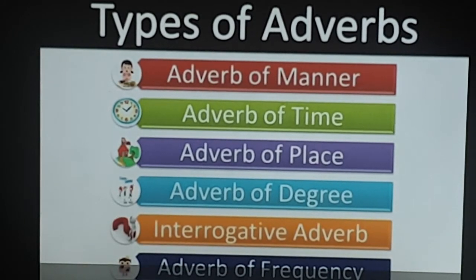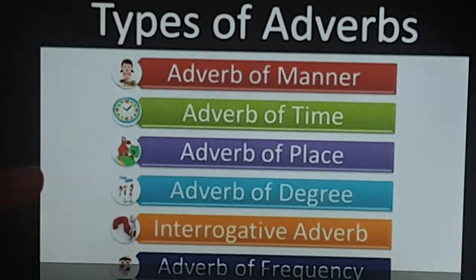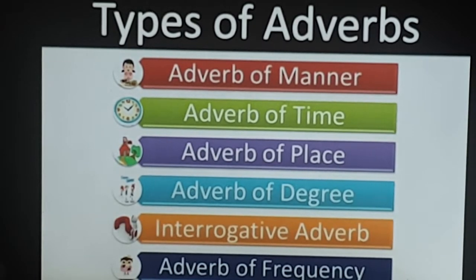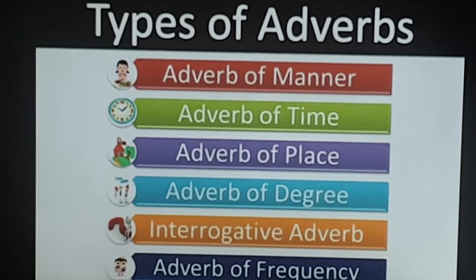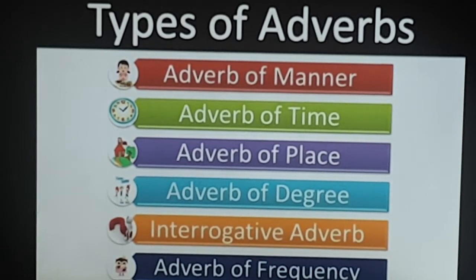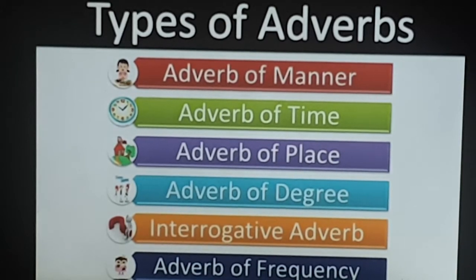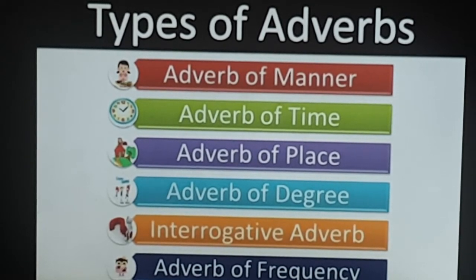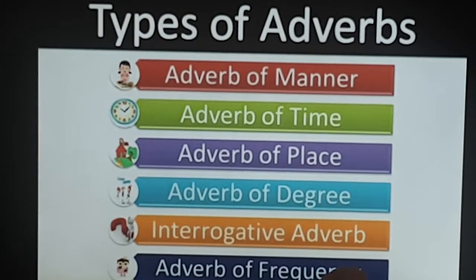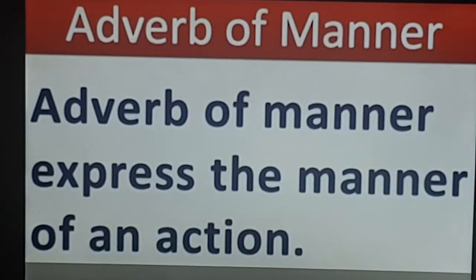Interrogative is the only one left. As you can see, the word means 'questioning word,' so these are questioning words which tell us when, where, or how an action is done — those are interrogative adverbs. Last is adverb of frequency; they tell us how often or how frequently. So the types of adverbs are: adverb of manner, adverb of time, adverb of place, adverb of degree, interrogative adverb, and adverb of frequency. Now let's take them one by one.